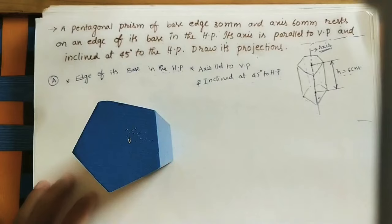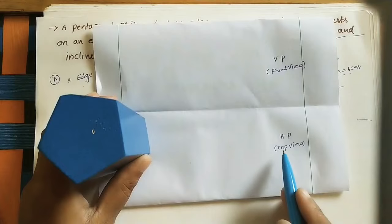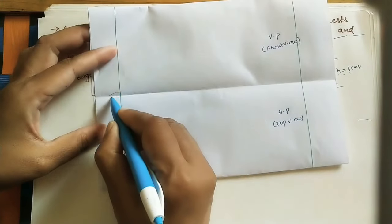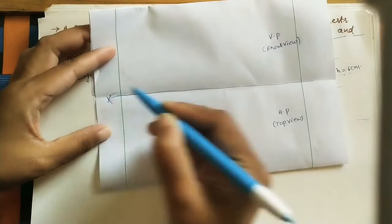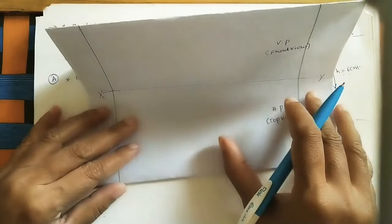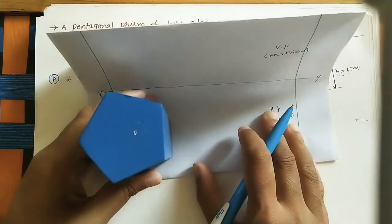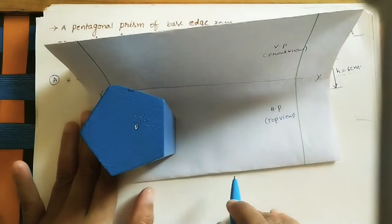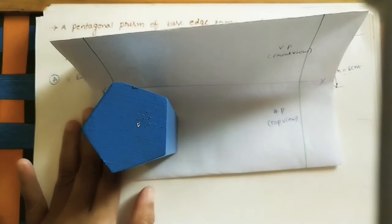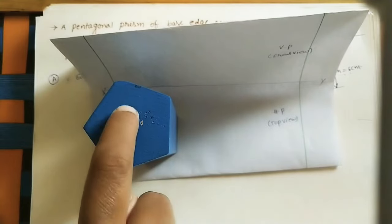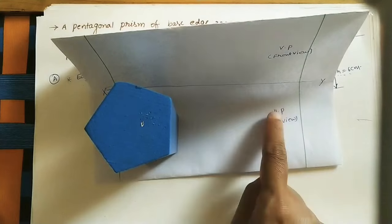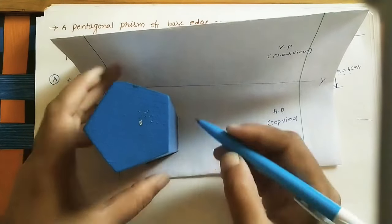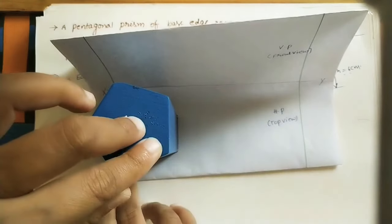For showing projections, take the vertical plane and horizontal plane in 3D form. The line joining both planes is the reference line or XY line. This is the first quadrant. We keep the solid with all edges on the HP. We need to do the top view and front view of this prism in this position.